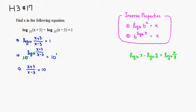Now this is much easier to solve. Since we don't like fractions, multiply by quantity x minus 3. That way the denominator cancels out, so you're left with the numerator, x plus 3, which is equal to 10 times x is 10x, and 10 times negative 3 is negative 30.